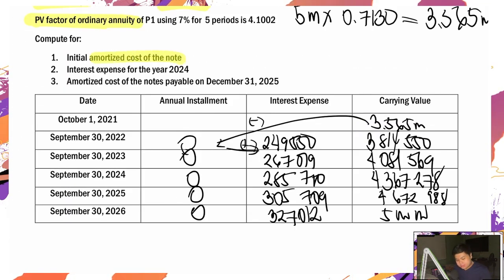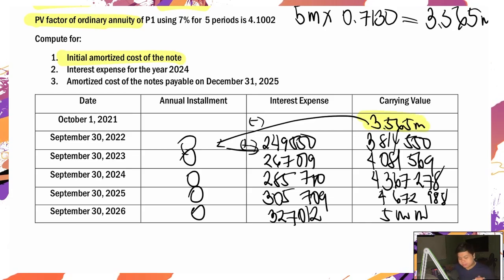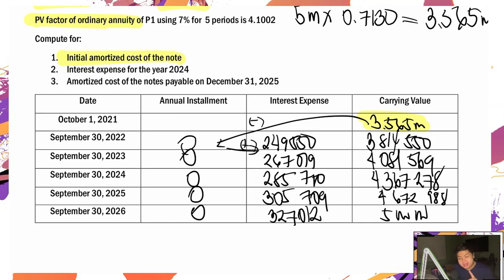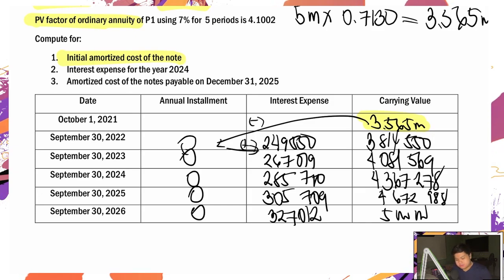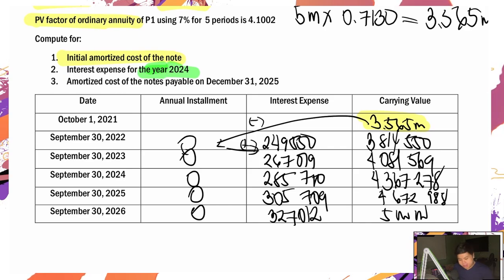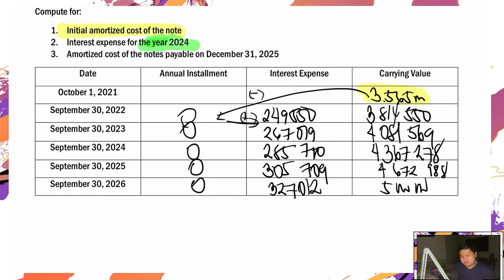Ano yung mga hinihingi? Una, initial amortized cost of the note: 3,565,000. Next, interest expense for the year 2024. Medyo interesting — kasi yung hinihiling ay for the year 2024, meaning calendar year. So tingin ka sa amortization table, yung pinakamalapit kay December 31.